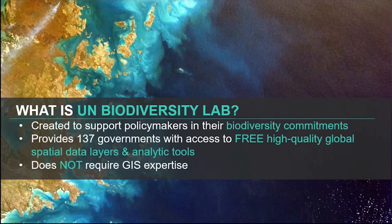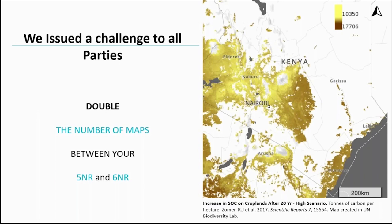Once we better understood the drivers of this data gap, we saw a huge opportunity to develop tools and trainings to help build the capacity of policy makers to use spatial data to support their efforts to protect nature and improve development opportunities. As part of this effort, we created the UN Biodiversity Lab in partnership with UN Environment and the Secretariat of the Convention on Biological Diversity. In 2018, we challenged all parties through the Convention on Biological Diversity to double the number of spatial analyses they're using to report on the status of nature in their country. We offered the UN Biodiversity Lab as a tool to help countries meet this challenge, but also offered a technical support program to help build capacity. Our goal is to help each country use spatial data in whatever way best addresses their national needs.